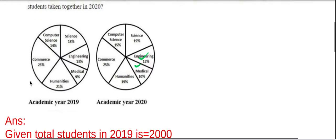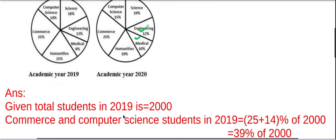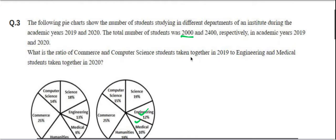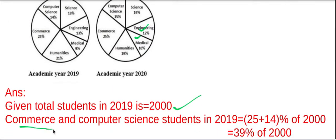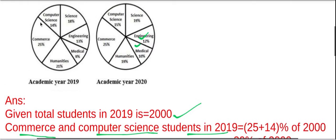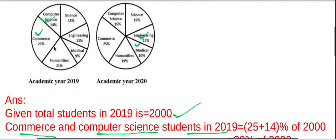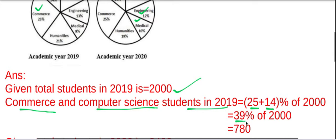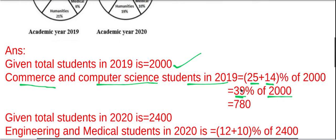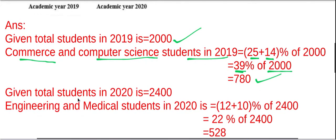Let's find the answer. The total number of students in 2019 is 2000. From the pie chart, commerce and computer science students in 2019 are 25% and 14% respectively. Both together are 25 plus 14, equal to 39%. So 39% of 2000 equals 39 into 20, that is 780.